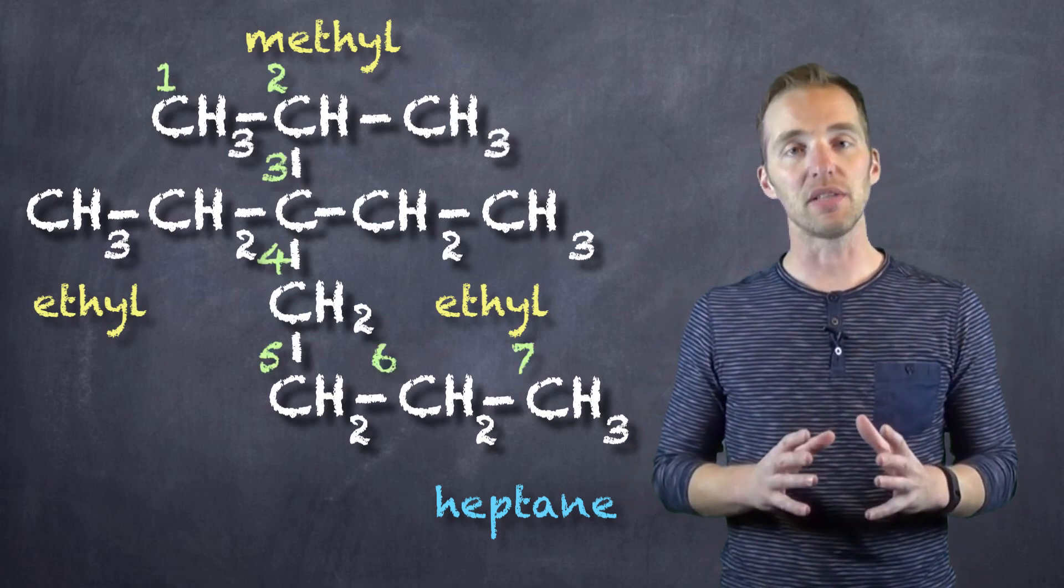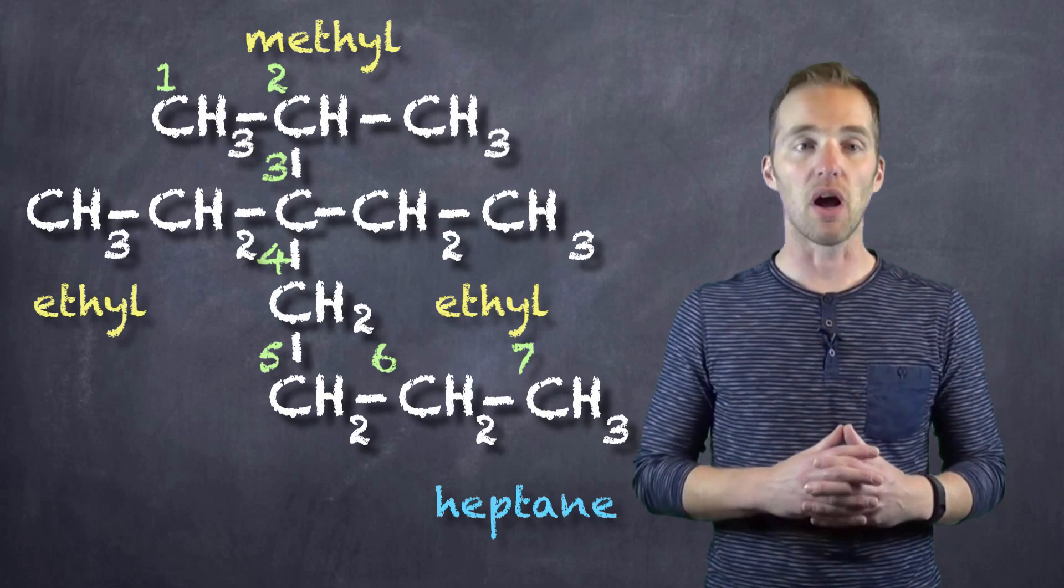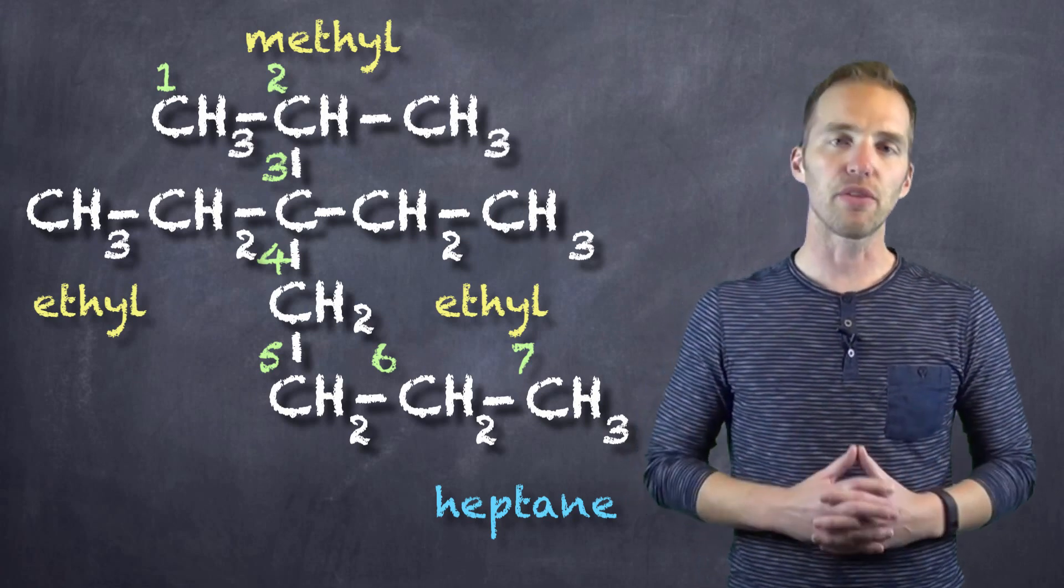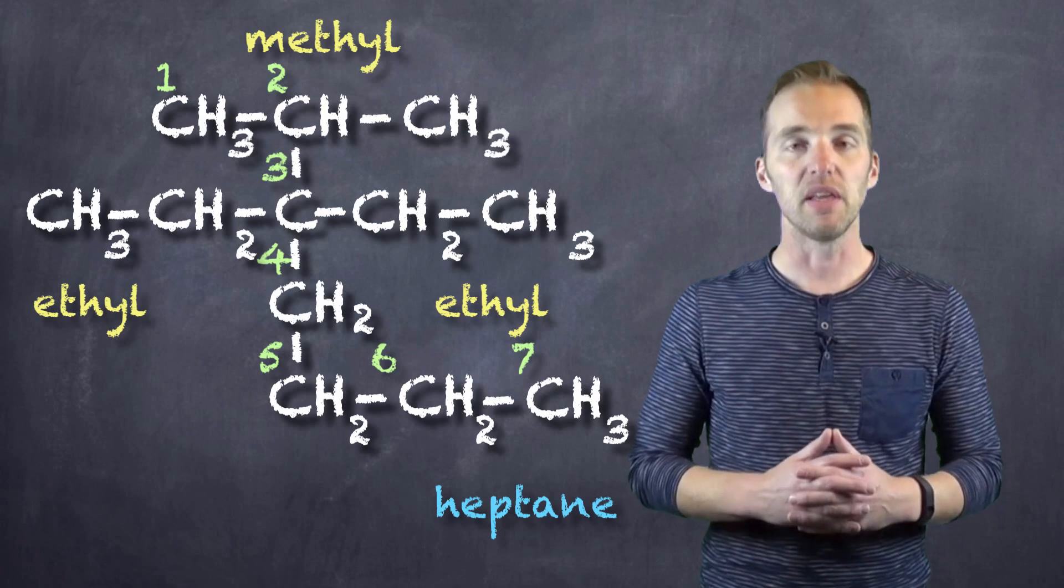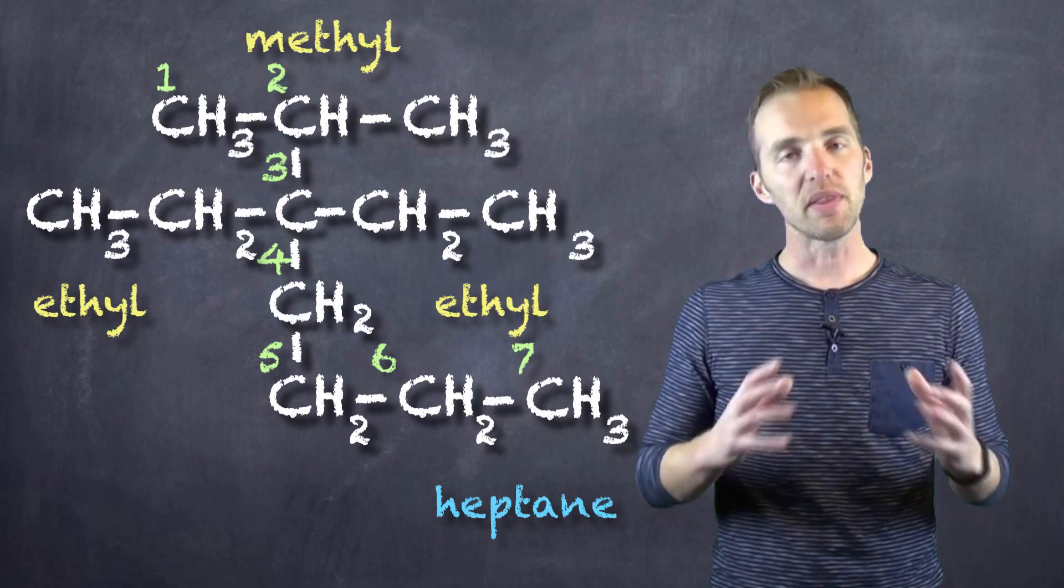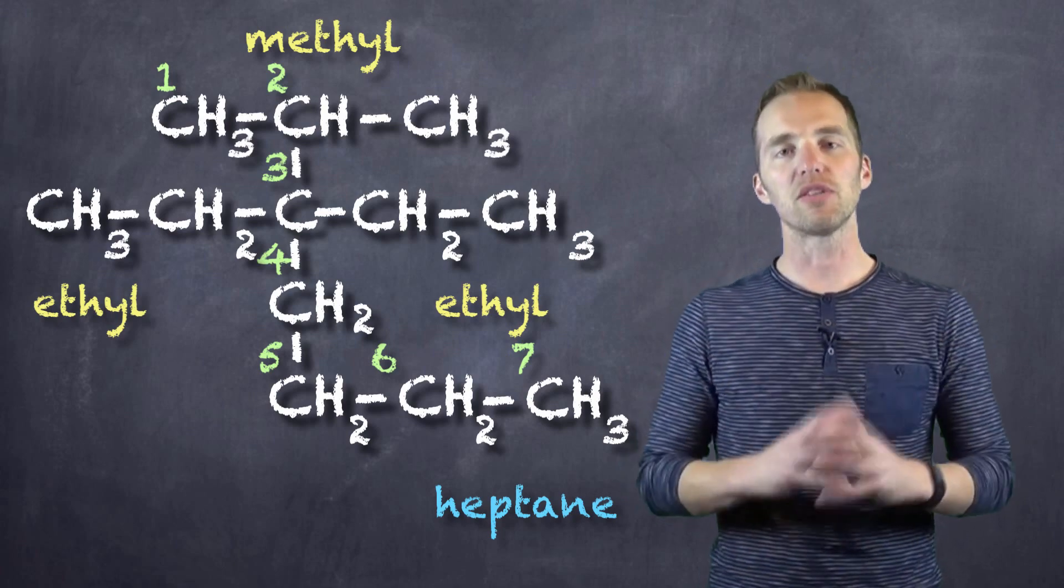So we obviously want to start counting from the top and numbering from the top, and in doing so we can see that we have the methyl group branching off of the second carbon, and we have our two ethyl groups branching off of the third carbon.